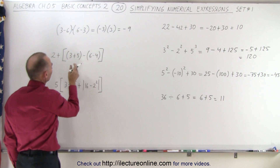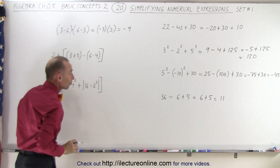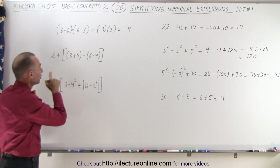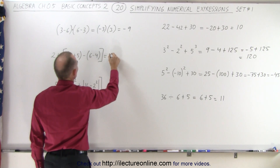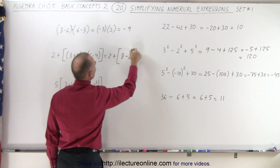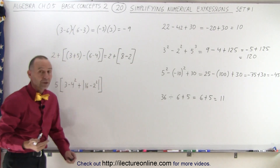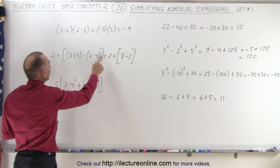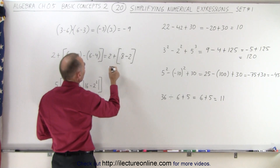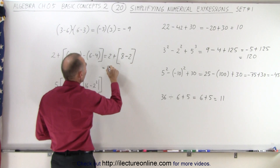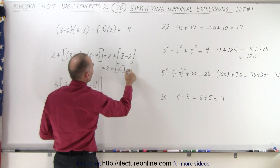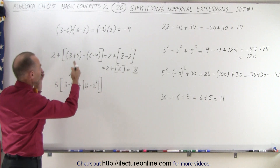Here again we must simplify what's inside the parentheses first — not solving, simplifying. So this becomes 2 plus 3 plus 5, which is 8, minus 6 minus 4, which is 2. I can remove the parentheses now: 8 minus 2. Next, I solve what's inside the brackets: 2 plus 8 minus 2, which is 6. And finally, 2 plus 6 equals 8, which is the simplest form of our initial expression.